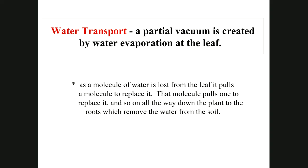Water transport in plants: a partial vacuum is created by water evaporation at the leaf. As a molecule of water is lost from the leaf to the atmosphere, it pulls a water molecule to replace it — and each water molecule is attached by hydrogen bonds to four others — pulling water all the way down to the roots, which remove water from the soil. When soil becomes water-deficient, the plant starts to wilt, a process called plasmolysis.